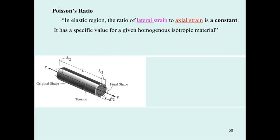Now, the Poisson ratio. Poisson found that in the elastic region, the ratio of the lateral strain to the axial strain is a constant value. For steel, it is about 0.3. For rock or concrete, it is about 0.1. And for the lumber band, it is about 0.4, but less than 0.5.